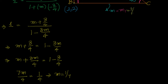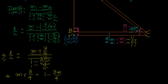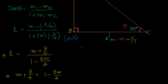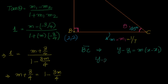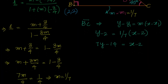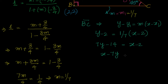So we got m1 equal to 1 by 7. We also know a point. I can directly go ahead and say the equation of BC is given by y minus y1 equal to m times x minus x1, point slope form. The point is (2,2). So y minus 2 equal to 1 divided by 7 times x minus 2. Doing cross multiplication: 7y minus 14 equal to x minus 2, which simplifies to x minus 7y plus 12 equal to 0.